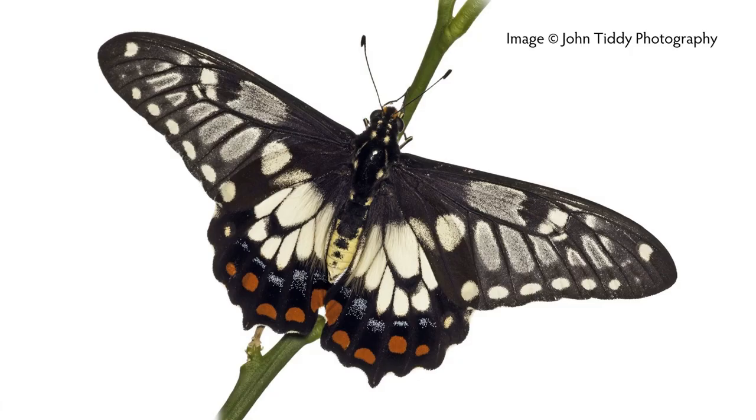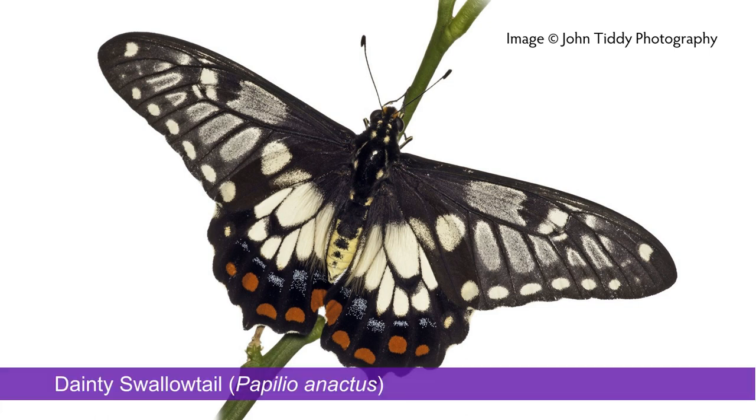Citrus butterflies are quite common on citrus trees. There are a couple of species involved and they are both native butterflies which breed on native and cultivated citrus. The species I get in my garden regularly is the small citrus butterfly, which is more correctly known as the dainty swallowtail. I see them flitting around my citrus trees in summer.